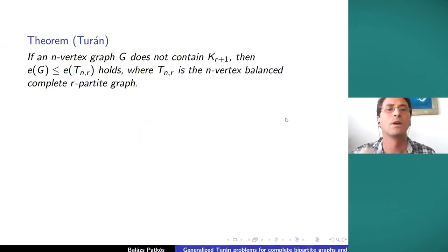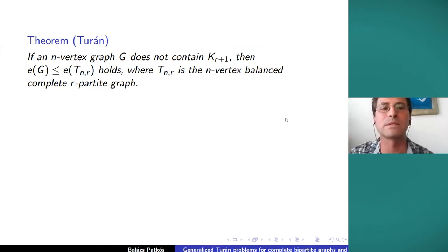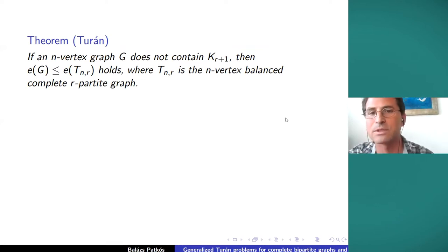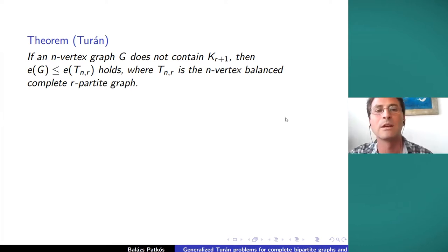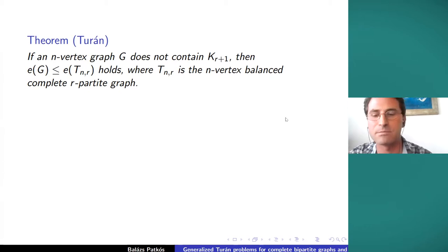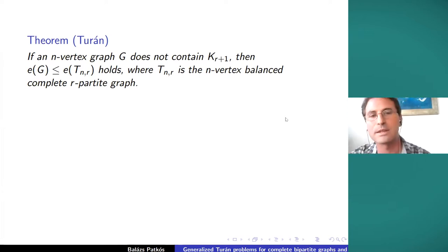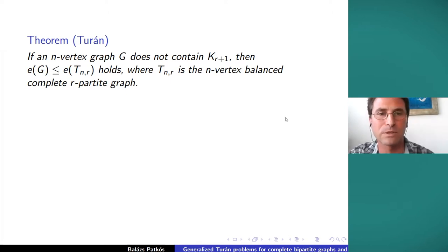So this is where we start — the Turán theorem from 1941. It's about the maximum number of edges that a graph can have if it has n vertices but doesn't contain a clique of size r plus one. I didn't put the expression there, but rather the extremal graph. This is the so-called Turán graph: the n-vertex, balanced, complete r-partite graph. We partition the vertices into r equal parts — if n is divisible by r they are equal, otherwise they differ by at most one — and we join two vertices if and only if they are in different parts. Clearly it doesn't contain cliques of size r plus one, because in a clique we cannot have two vertices from the same part.